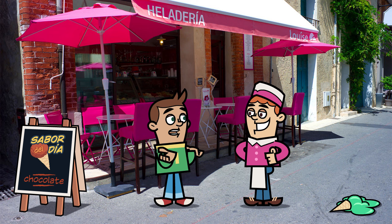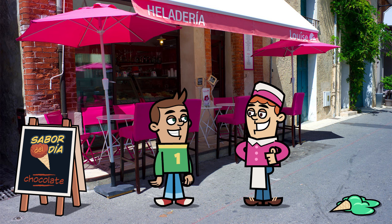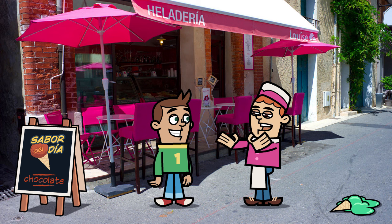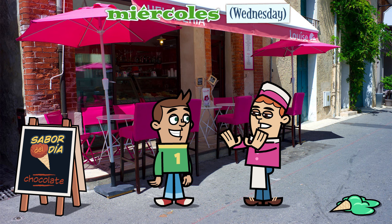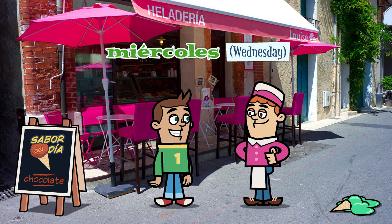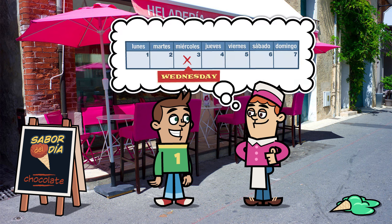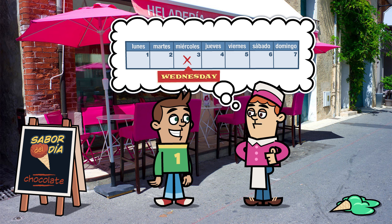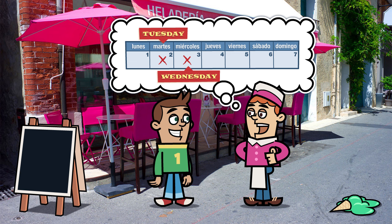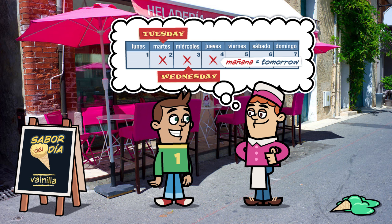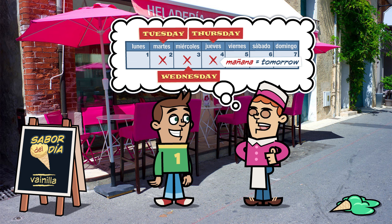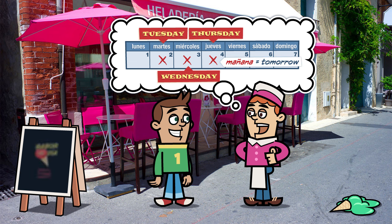¿Qué día es hoy? ¿Es martes? ¿Es miércoles? No, no es martes. Pero sí es miércoles. El miércoles es mi día favorito. Yo trabajo en una heladería. Los miércoles el sabor del día es chocolate. Ayer, el martes, el sabor del día era vainilla. Y mañana, el jueves, el sabor del día es fresa.